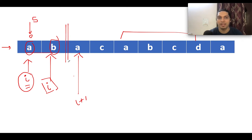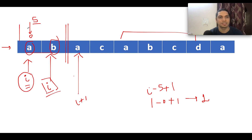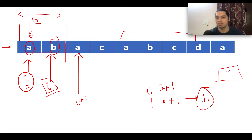That means we have successfully identified the length of our first contiguous substring. We use the formula i minus s plus one. At i we have 'b' (index 1) and at s we have 'a' (index 0), so one minus zero plus one gives a length of two. This is in sync with our expectation — the first contiguous substring length is two. Let's update our max length variable to two.